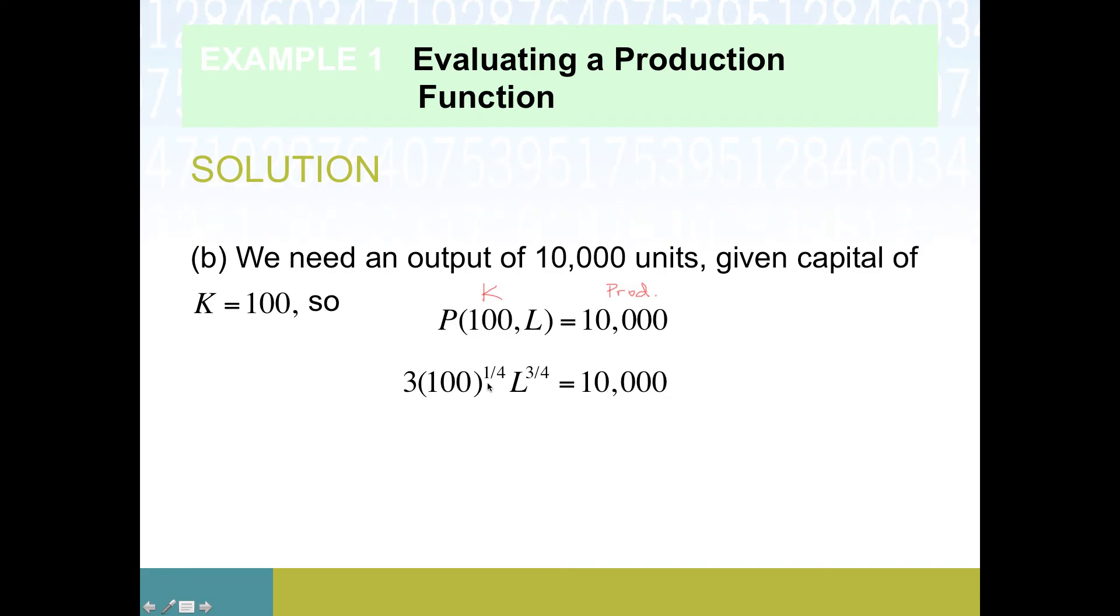Once we get past the notation, we've got this function of more than one variable, and now we're down to an equation that just needs to be solved for the missing input. Our strategy is basically saying we have a three-quarters power stuck on this L. One of our helpful strategies is raising to the reciprocal. If we flip this guy around we can get rid of that. The catch is we have to do the same thing on the other side.